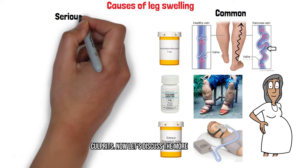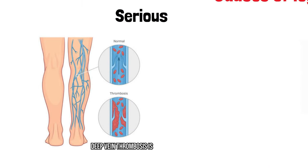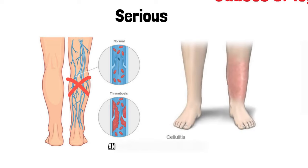Now let's discuss the more serious causes. Deep vein thrombosis is a blood clot that's blocking the veins. Infection, like cellulitis, an infection of the soft tissues in your leg due to bug bites, cuts, or traumas.